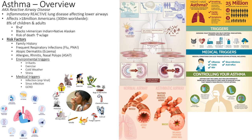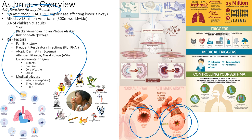Asthma overview: asthma is reactive airway disease — another name for it. It's where the airway gets inflamed for some reason, usually triggered by something that causes the airways to obstruct, to be reactive and close shut. A normal airway versus an asthma airway — the diameter drops dramatically. You have a squeezing of the airways and air cannot get in. It's an upper airway problem, not an alveolus or lower bronchial problem.